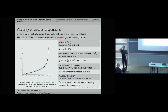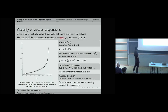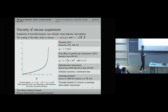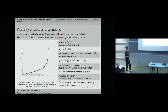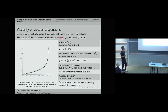Let's start with the case of viscous suspensions. A viscous suspension in our case is a neutrally buoyant, non-colloidal, monodispersed hard sphere immersed in a viscous fluid. In this case the scaling of the shear stress is viscous, meaning shear stress τ is proportional to γ̇ (the shear rate). γ̇ is amplified by the viscosity of the solvent and also by a dimensionless function η_s, the shear granular viscosity, which is solely a function of the packing fraction φ.